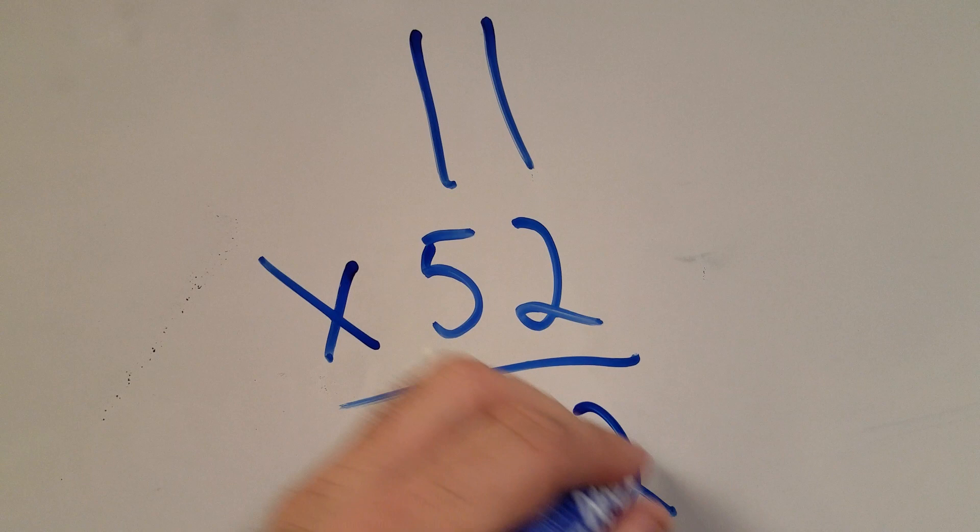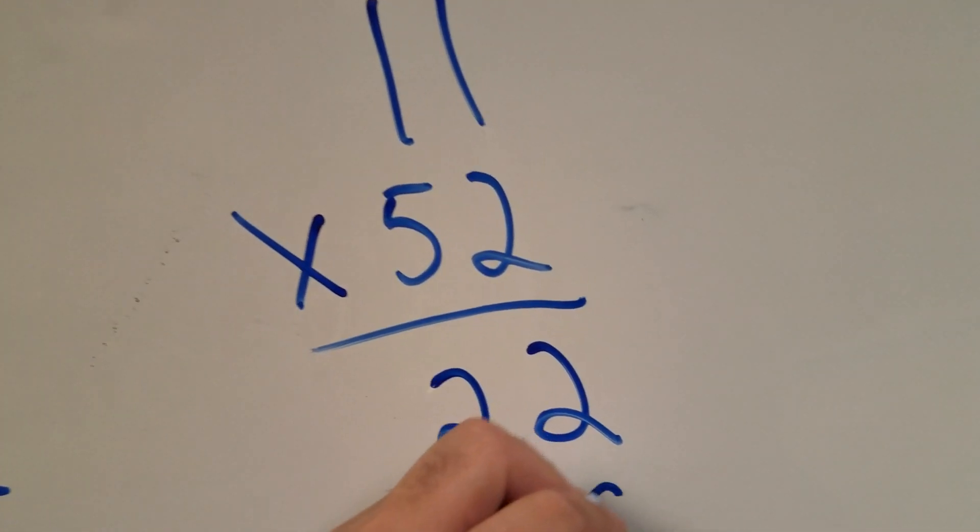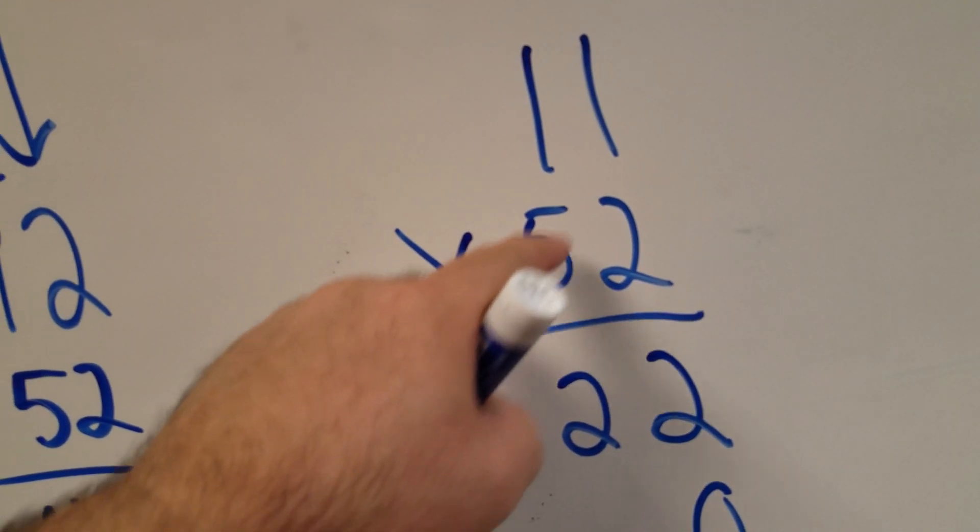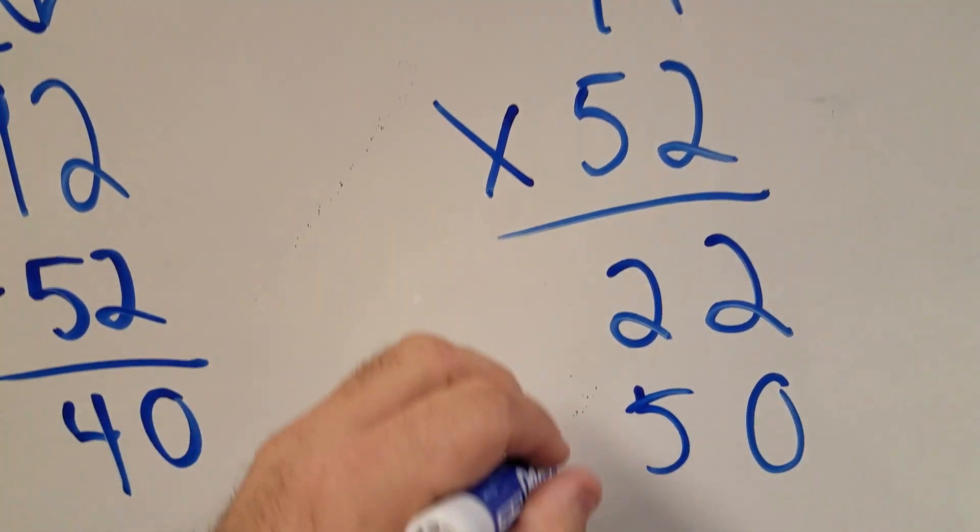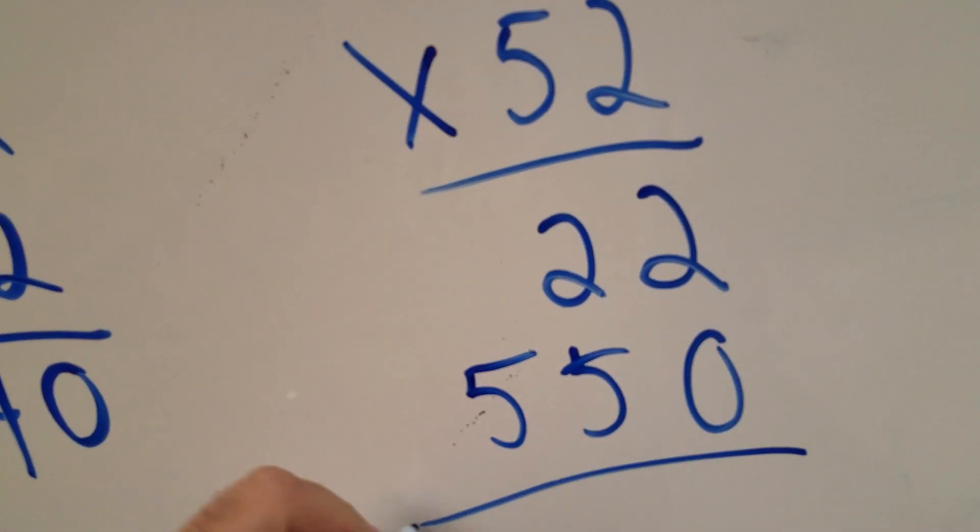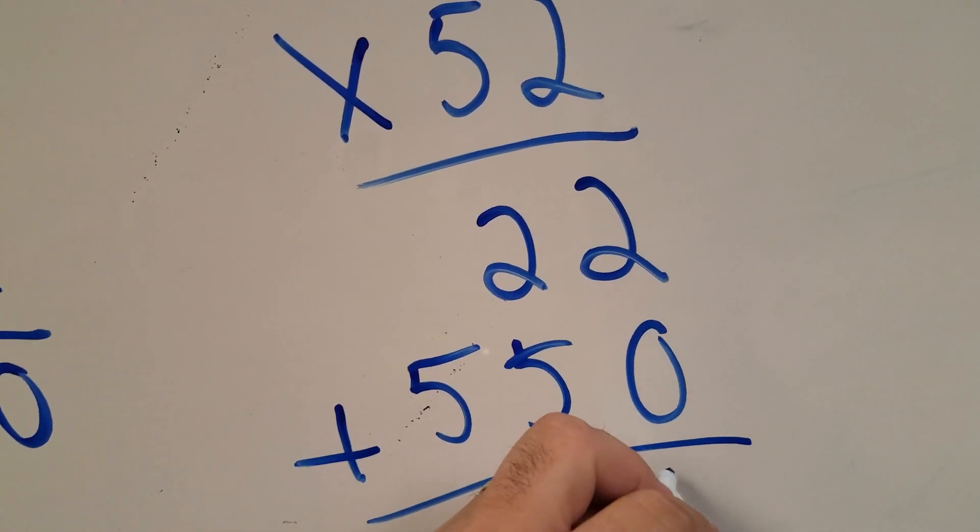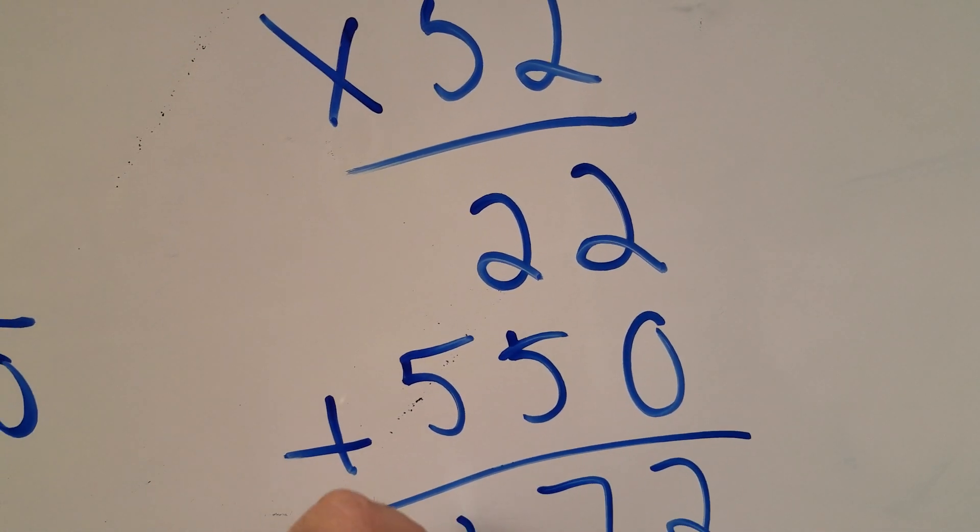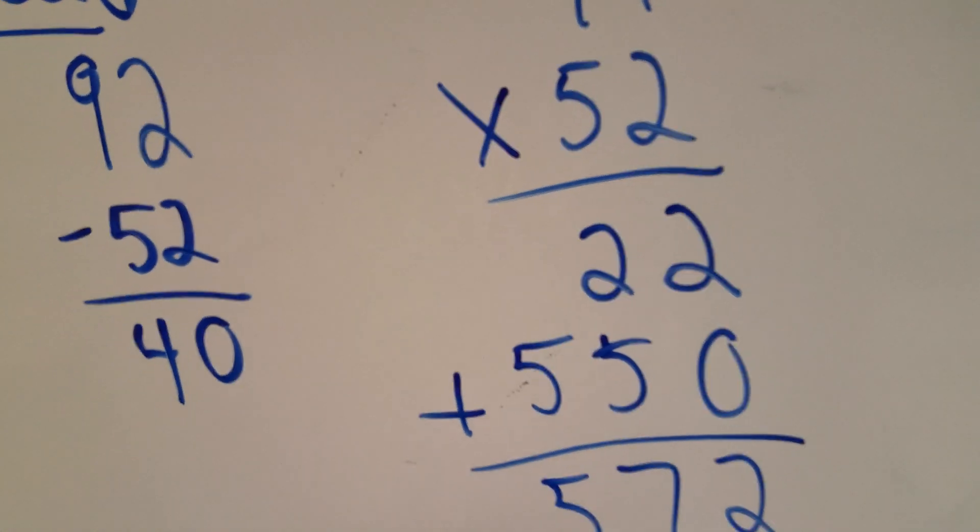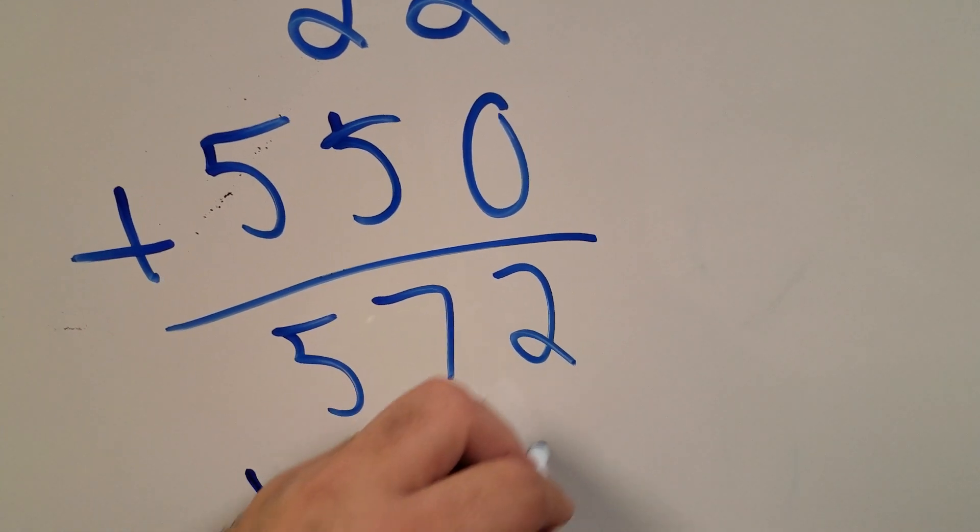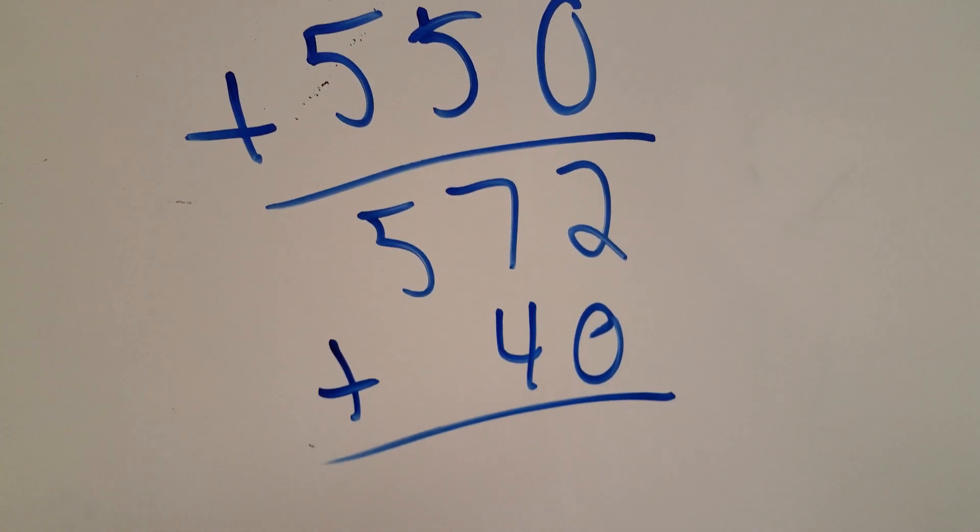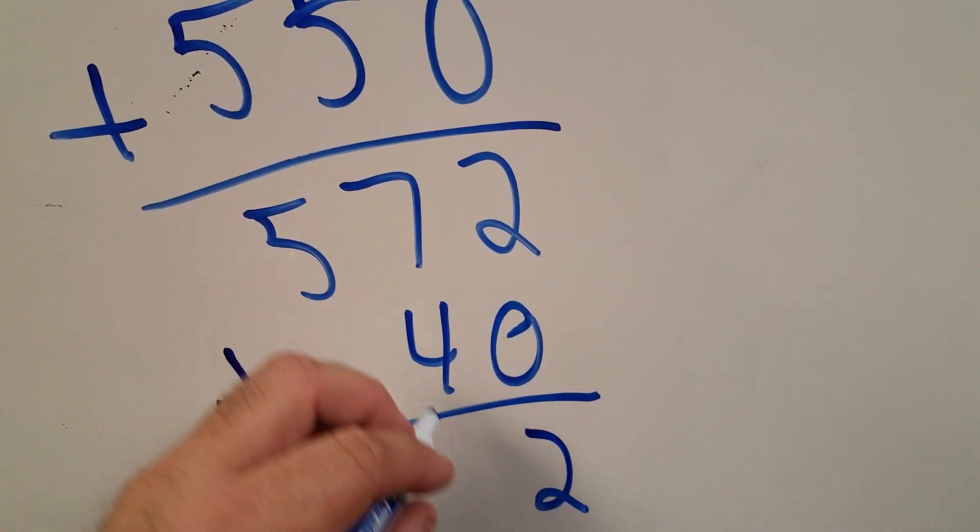2 times 1 is 2, 2 times 1 is 2. Don't forget to put in my placeholder because now I'm doing the tens. 1 times 5 is 5, and 1 times 5 is 5. Add these up, and I got 572. Now I need to add in my remainder.